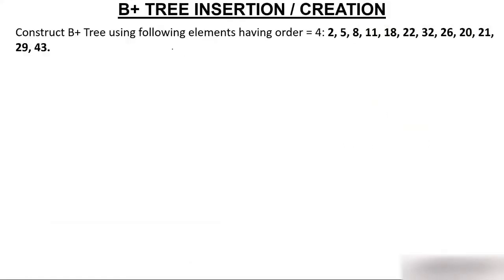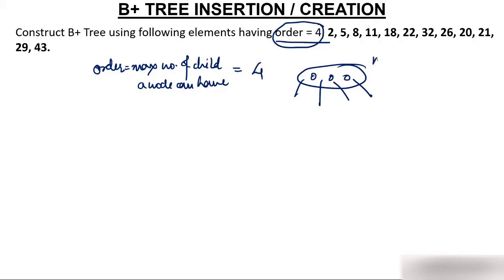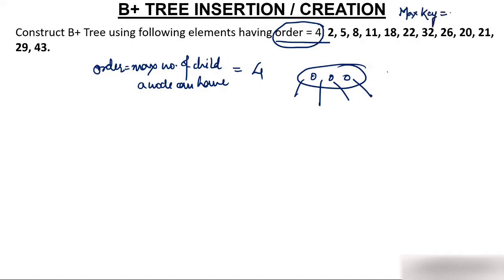Let's start with B+ tree. You have to construct a B+ tree using the following elements, having order equal to 4. The order of the tree is 4. What is order? Order is the maximum number of children a node can have. So a node can have 4 children. If a node can have 4 children, then a node can have only 3 keys, because the number of children is always one greater than the number of keys. So maximum keys in any node is 3.